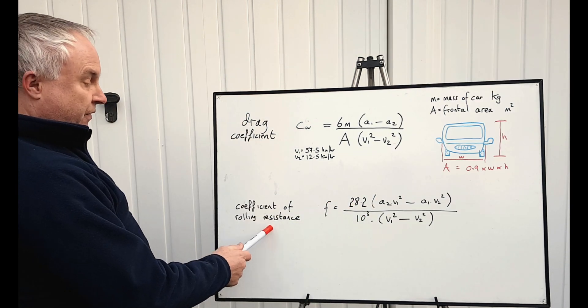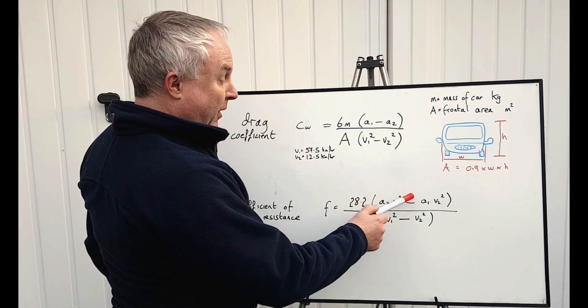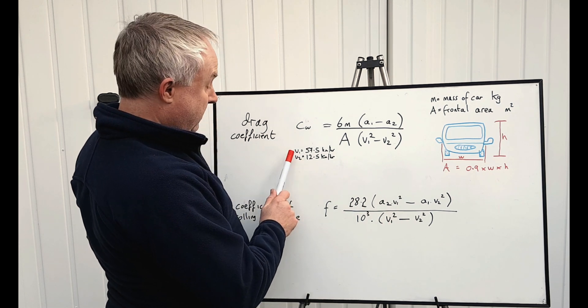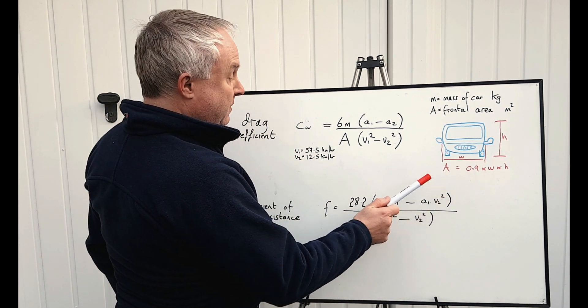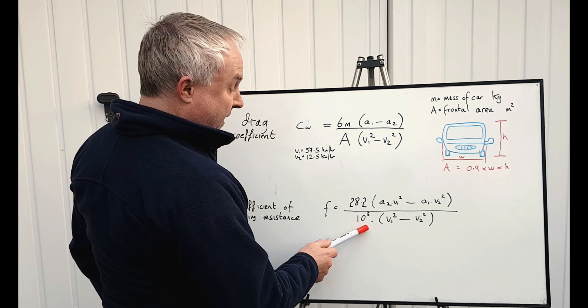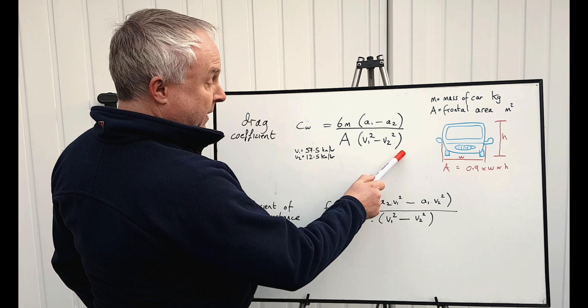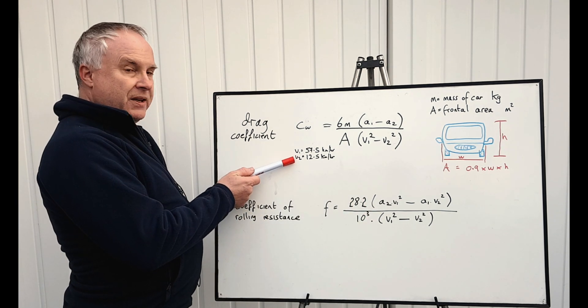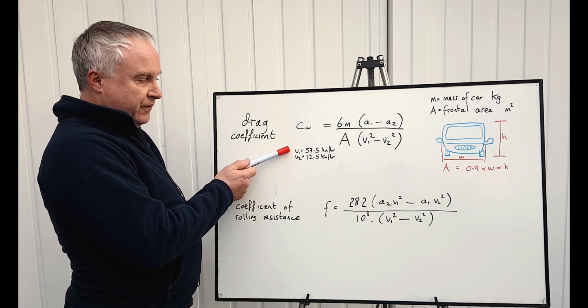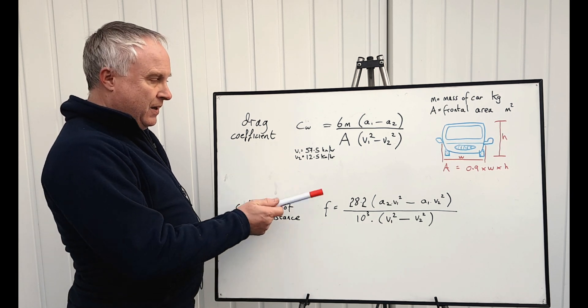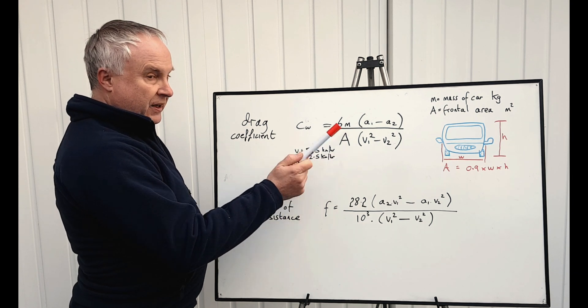The coefficient of rolling resistance, F, is 28.2, multiplied by A2V1 squared, minus A1V2 squared, divided by 1,000 times V1 squared minus V2 squared. V1 and V2 are the two average velocities, which in this instance are 57.5 and 12.5 because we're going from 60 to 55 and 15 to 10.